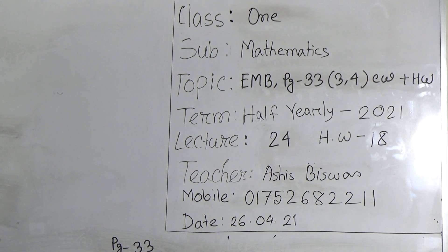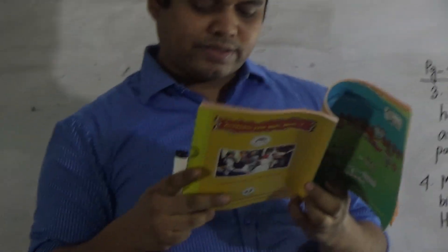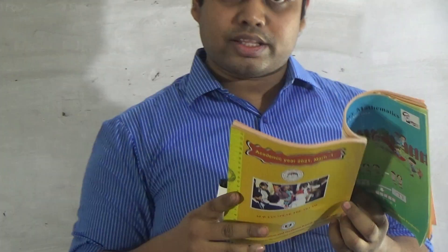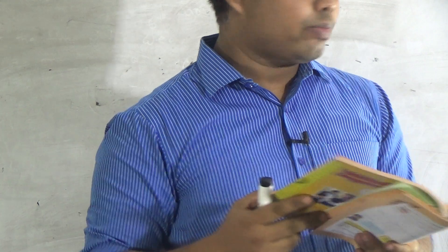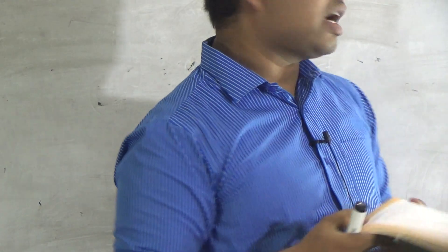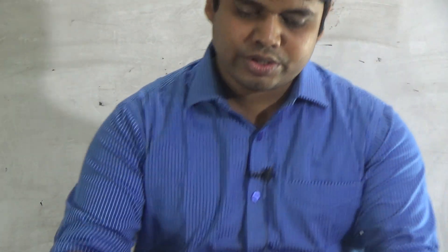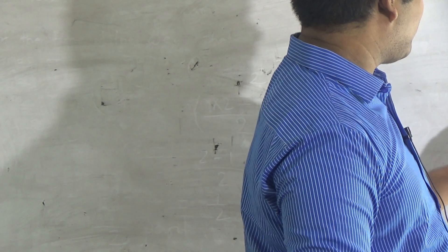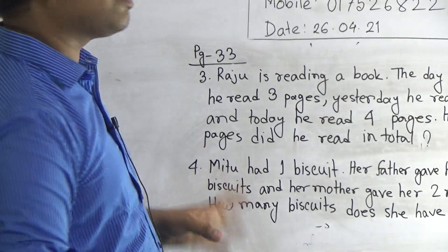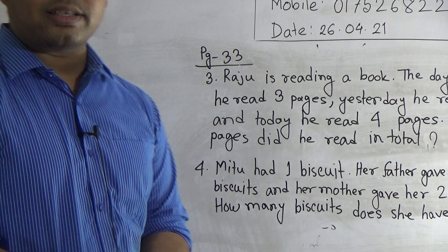I hope all of you have this book. Please open page number 33. I have already written these two word problems on the board. So now follow the board please. Here, page number 33 — odd problem number 3 and odd problem number 4 will be solved in our class as CW.